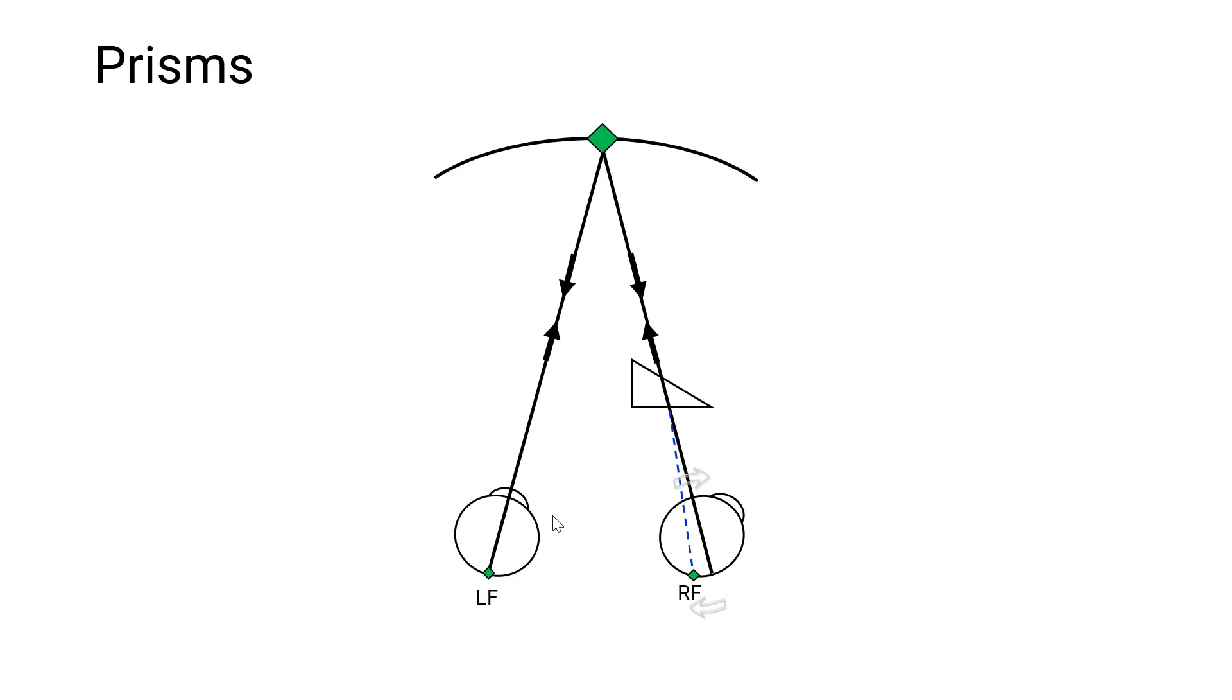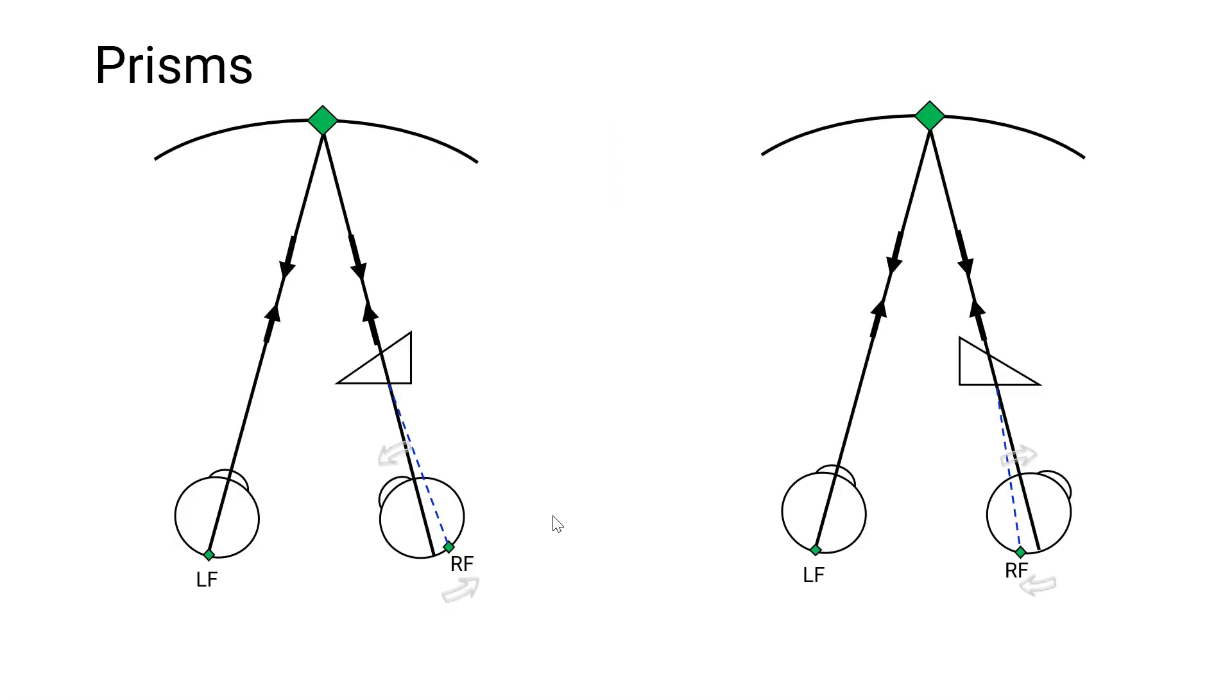Okay, so what did we learn from this? If you put a base-out prism before the eye, you will stimulate a temporal retinal point, and fusional convergence will be required to overcome it. If, on the other hand, you put a base-in prism before the eye, you will stimulate a nasal retinal point, and fusional divergence will be required to overcome it. Okay, that brings me to the end of this video. Thank you for watching.